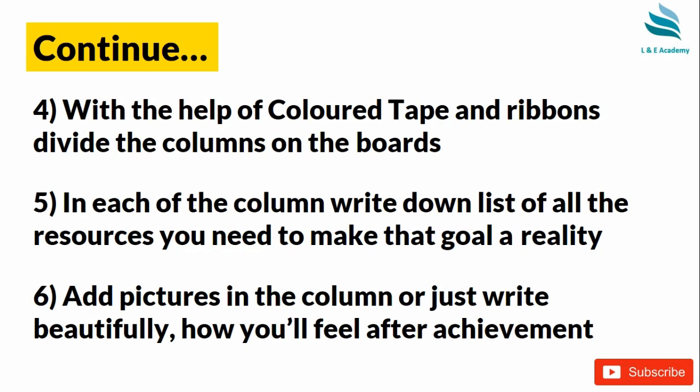In each of the columns, write down a list of all the resources you need to make that goal a reality. Every goal you have will require certain resources — the things you need to achieve that goal — and you need to write it down in that column. Give yourself a timeline: put a time to yourself that within this time I will achieve this goal. And maybe after a year, this column will be replaced by some other goal.